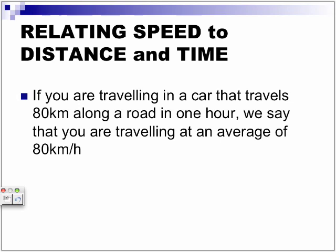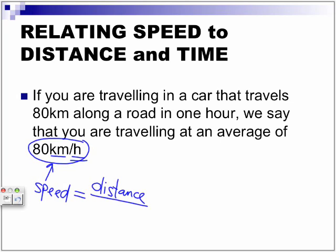Average Speed. Relating speed to distance and time. If you are traveling in a car that travels 80 kilometers along a road in one hour, we say that you are traveling at an average of 80 kilometers per hour. This 80 kilometers per hour is represented as the speed of our object. And if you look at our speed of an object, there are always two sets of units: a distance and a time. Hence, in order to calculate speed, you take your distance and divide it by your time.